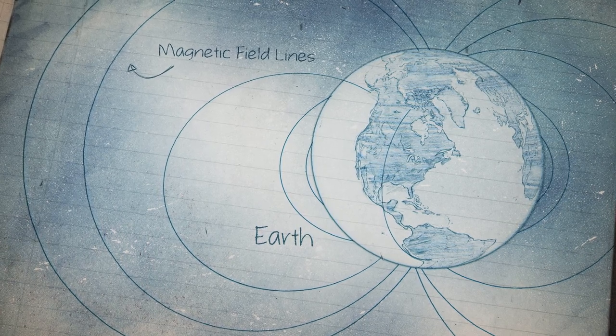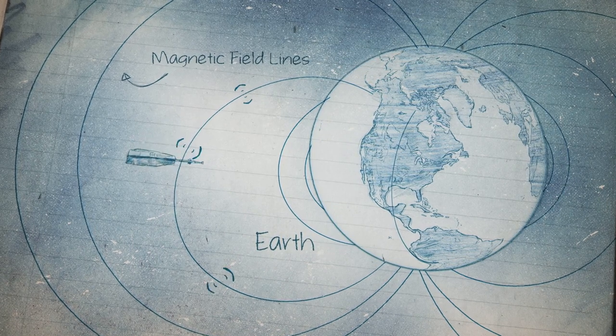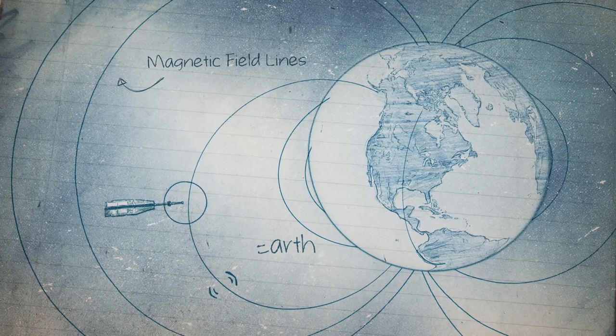The ever-changing field is full of fluctuations from many sources. Satellites observing these oscillations let scientists identify individual sources creating the magnetic field.